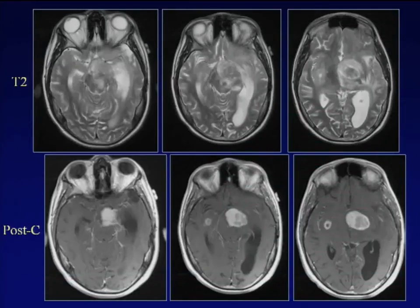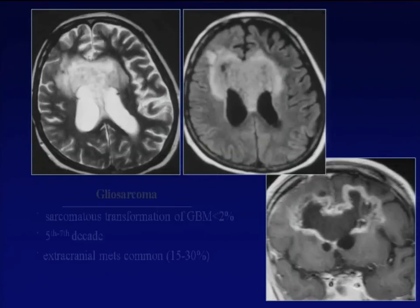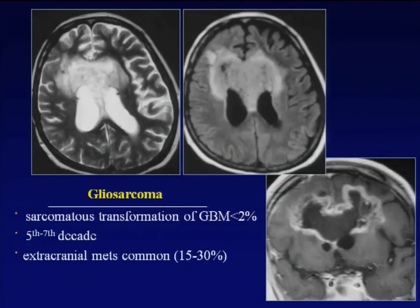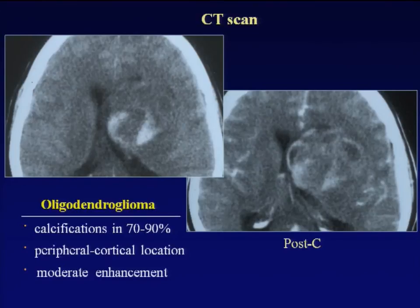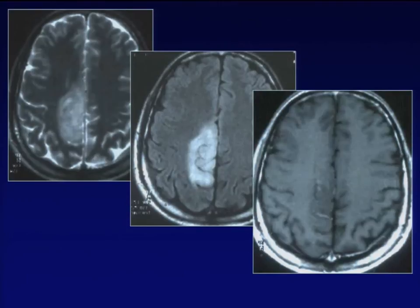Another image shows multicentric glioma with multiple foci. Gliosarcoma is another type worth remembering as it is commonly associated with extracranial metastases. Some imaging features are very pathognomonic: on pre- and post-contrast CT, very large calcifications point to oligodendroglioma — the association is 70–90% of cases. Oligodendroglioma is located peripherally near the cortex and typically has a moderate degree of enhancement. Another case of oligodendroglioma on T2/FLAIR and post-contrast shows the peripheral location.